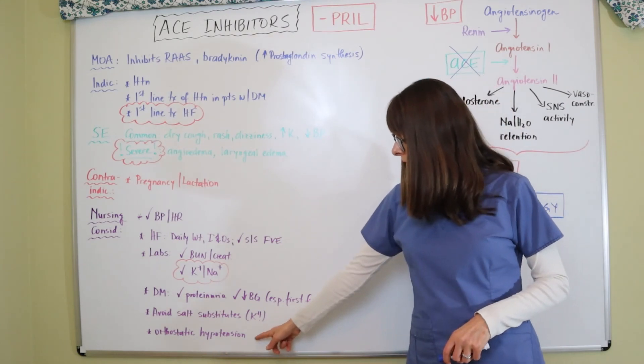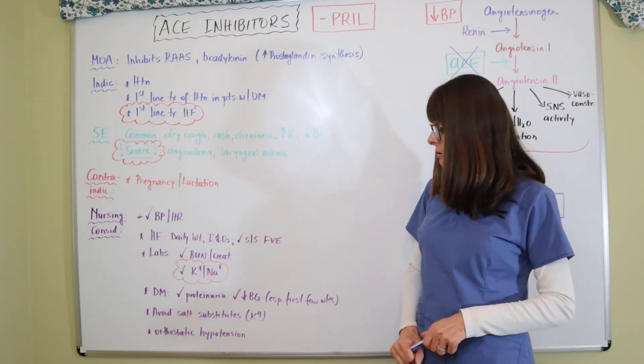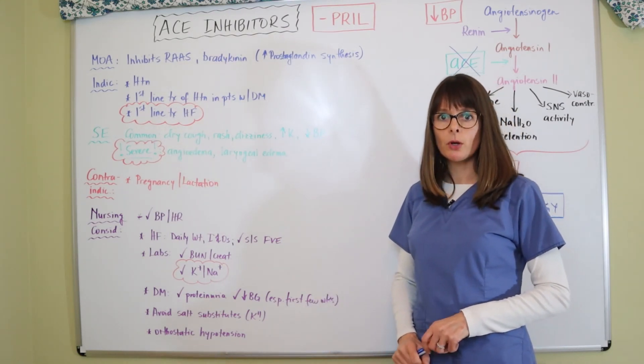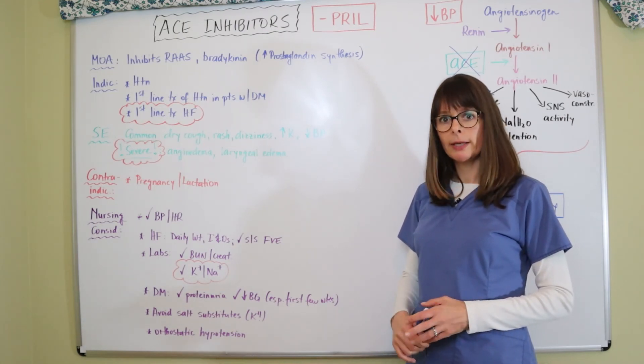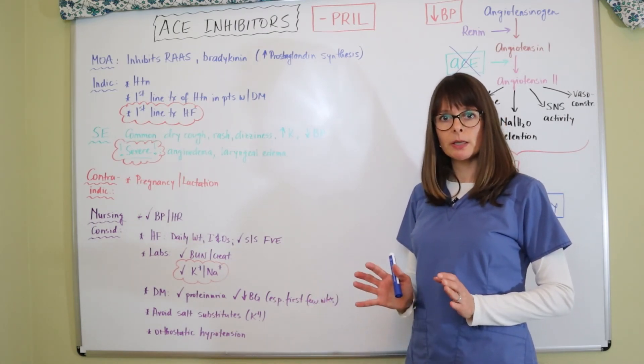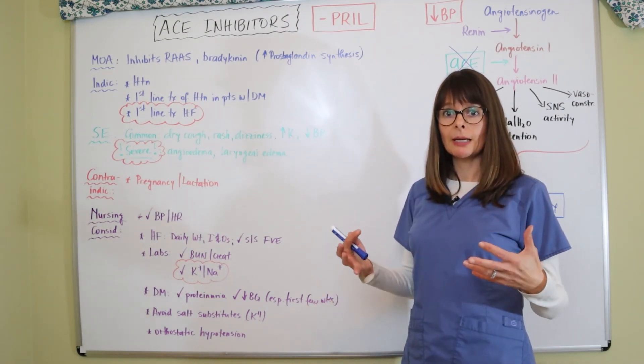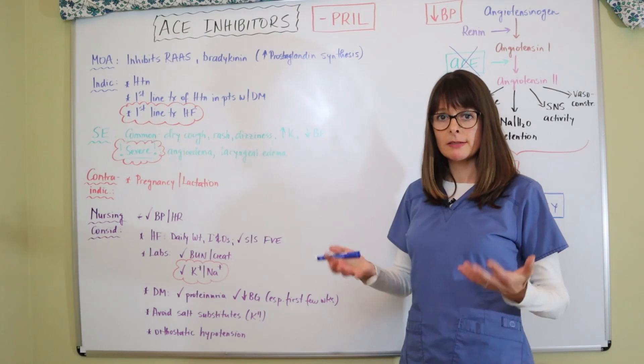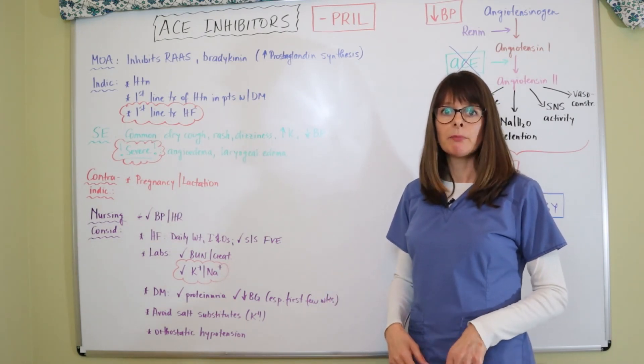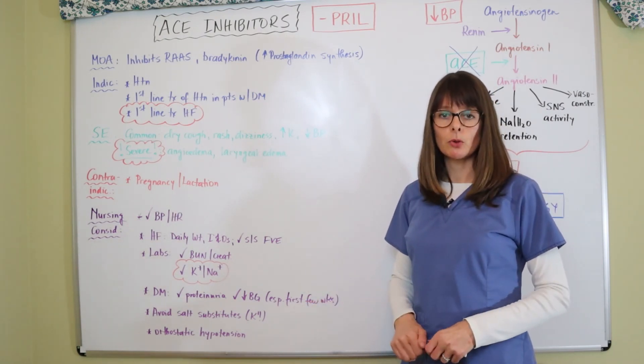And then also it can cause some orthostatic hypotension. So we want to use the common measures for that, making sure the patient gets up nice and slowly from a lying to a sitting position. Make sure they get their bearings for a few minutes before standing up. Again, wait a few minutes and then start to walk because they might feel dizzy and they're prone to falls.